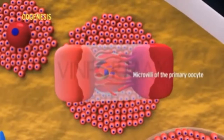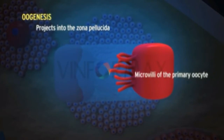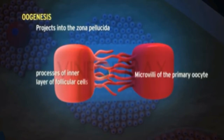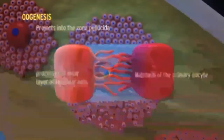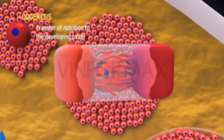Numerous microvilli of the primary oocyte project into the zona pellucida, where they come in contact with similar processes of the inner layer of follicular cells. This helps in the transfer of nutrition to the developing ovum.